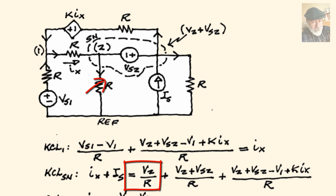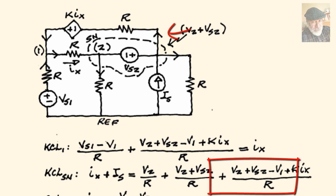Leaving the node. This one. V2 over R. Plus the one on the far side on the right, which is V2 plus VS2 divided by R. And the current at the top that we've already described on the previous equation.